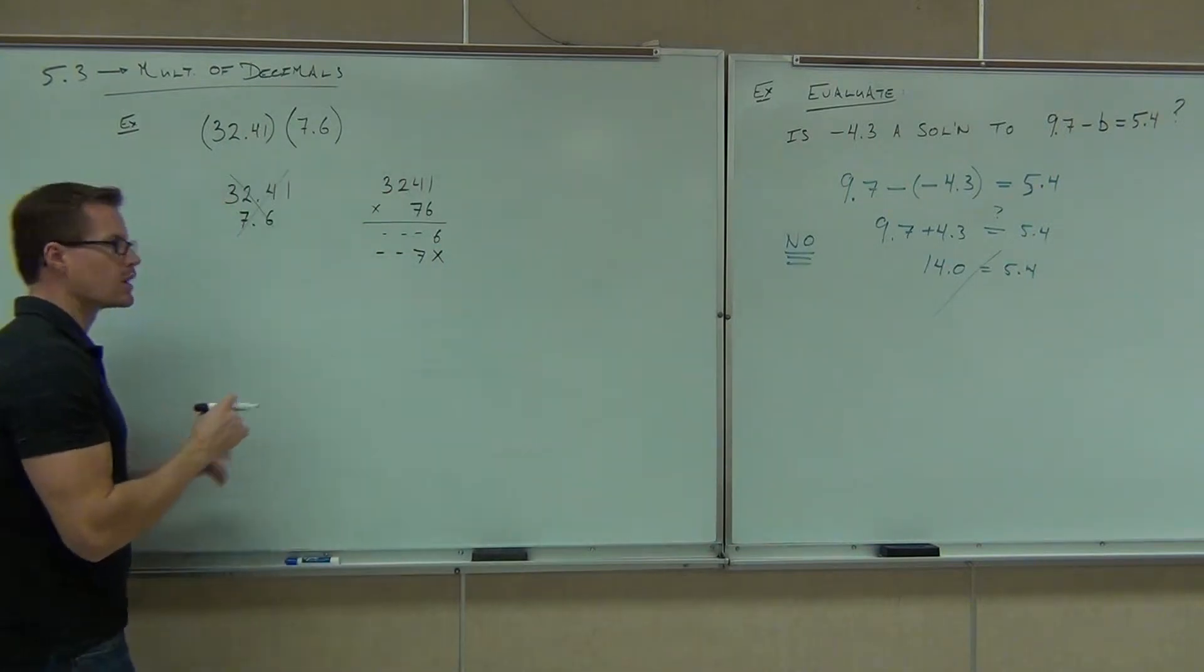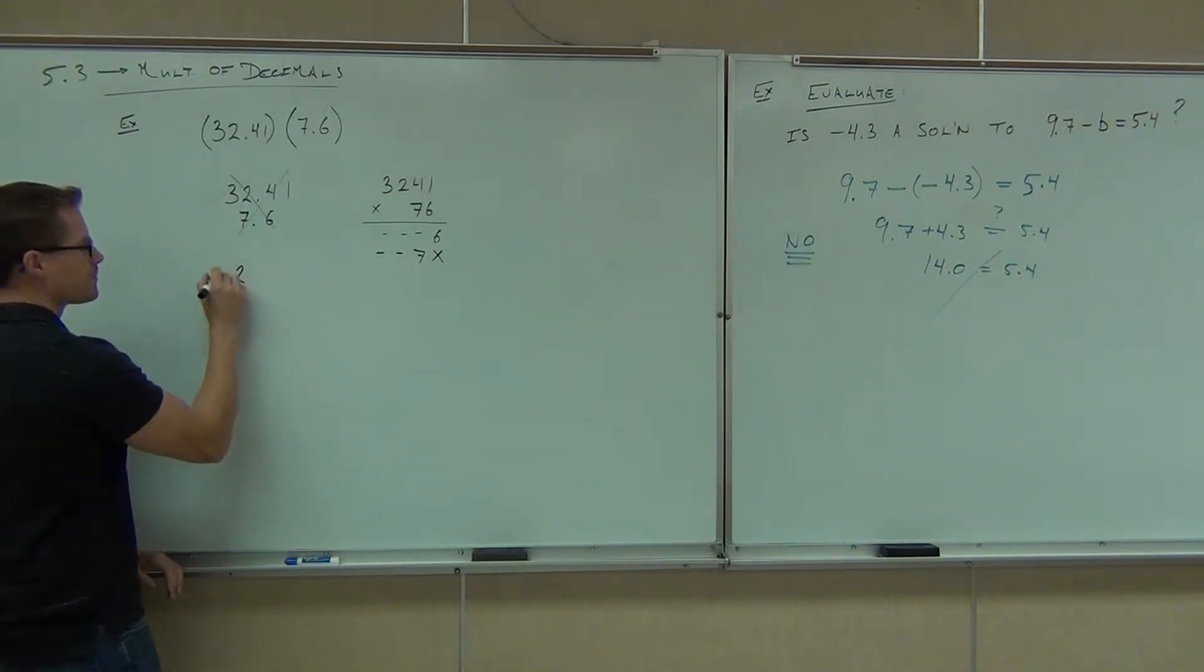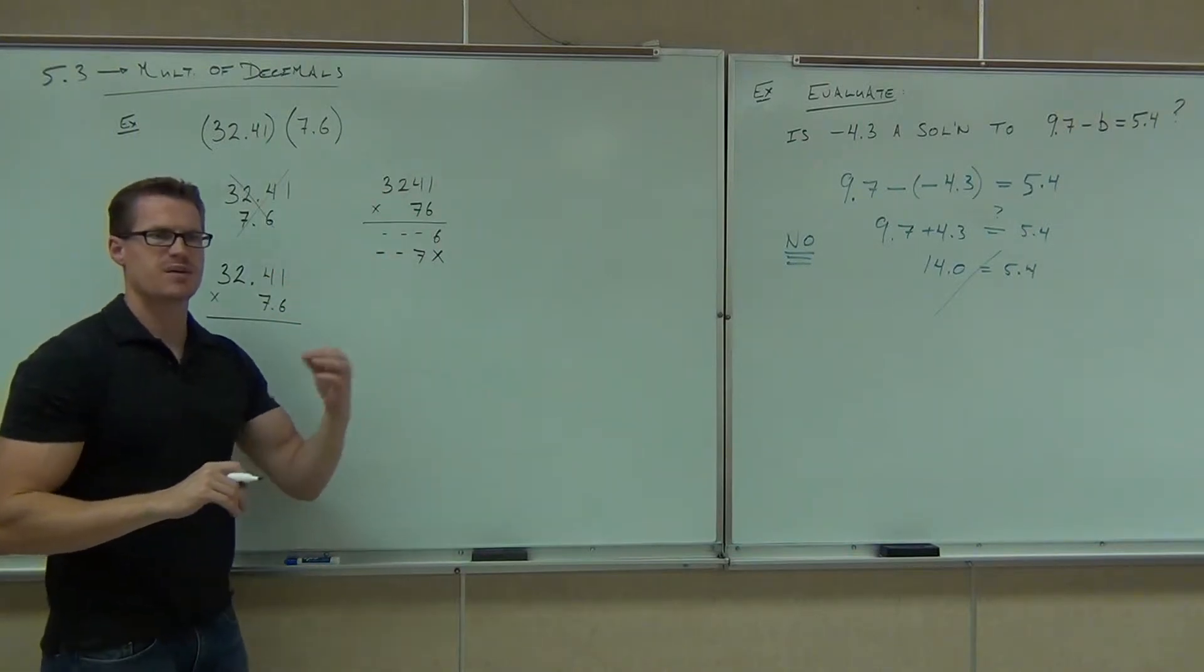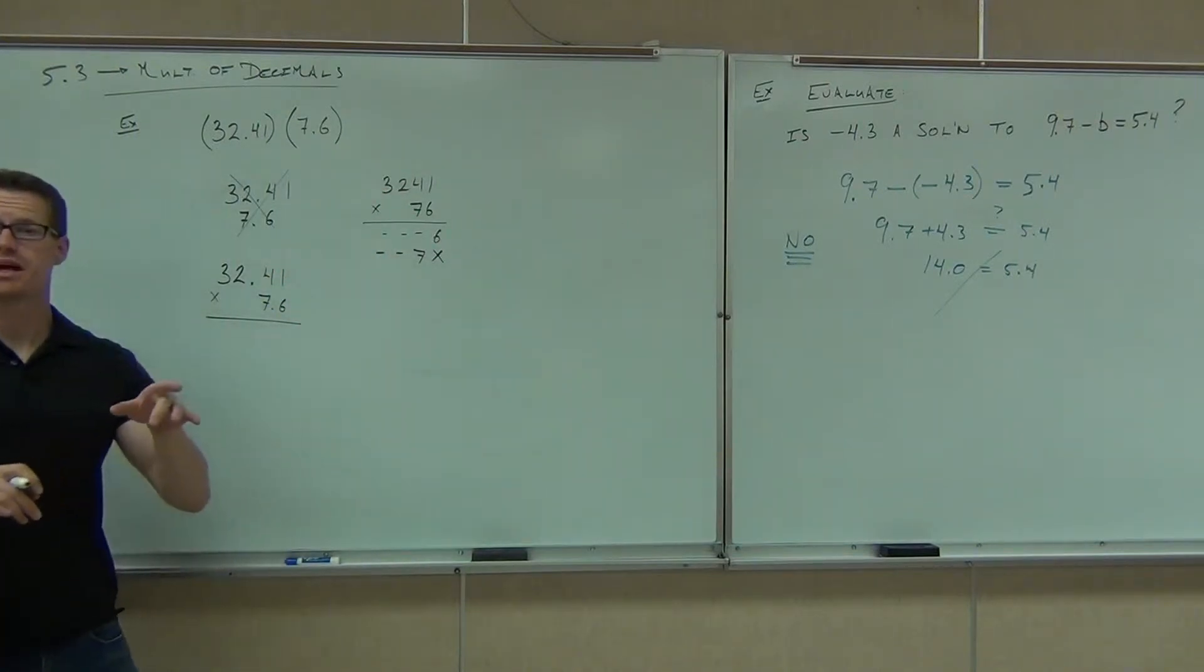But with multiplication, you deal with that place value in a different way. So we'll line these up. 32.41 and 7.6. We're going to multiply just like we did over here. We'll get the same exact numbers we would normally get. So stick it out with me.